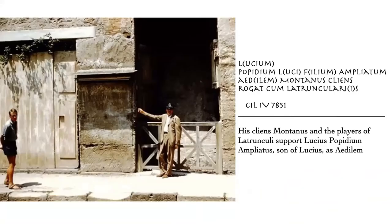This is a very interesting mention. In Pompeii, there was a writing that Lucius Popidium Ampliatus, son of Lucius, as Edilem — Montanus cliens rogat cum Latruncularis. So his client Montanus and the players of Latruncoli support Lucius Popidium Ampliatus as Edilem, which means that the players of Latruncoli were taken seriously by Roman society and, differently from dice players, they didn't suffer a social stigma. I will come back later on the moral implications of board games.